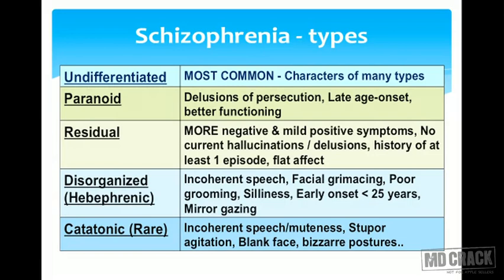There are several types of schizophrenia. Undifferentiated is the most common, containing characteristics of multiple types. Paranoid schizophrenia features delusions of persecution — feeling someone is spying, planning to harm, or trying to kill the patient. It has a comparatively late age of onset and better general functioning than other types.